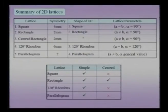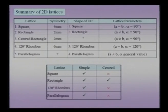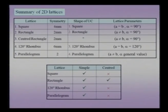Let us summarize all the 2D lattices and look at their symmetry, unit cell shape, and lattice parameters. The lattices in two dimensions are: the square lattice, the rectangle lattice, the centered rectangle lattice, the 120-degree rhombus lattice, and the parallelogram lattice. The square lattice has 4mm symmetry; the rectangle lattice has 2mm symmetry; the centered rectangle lattice also has 2mm symmetry; the rhombus lattice has 6mm symmetry; and the parallelogram lattice has the minimum possible symmetry, which is a 2-fold.